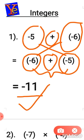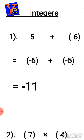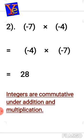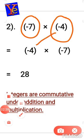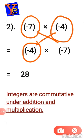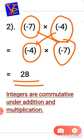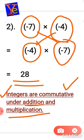Now for multiplication with integers: minus seven multiplied by minus four. Switching the positions gives minus four multiplied by minus seven, and I get the same answer, 28, both times. The conclusion is that integers are commutative under addition as well as multiplication.